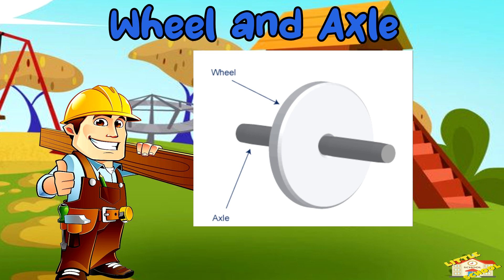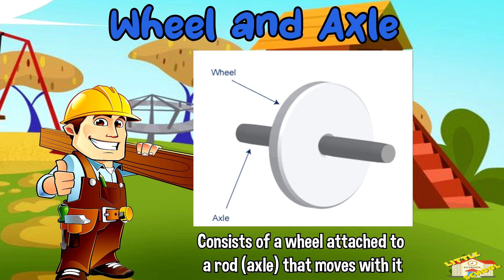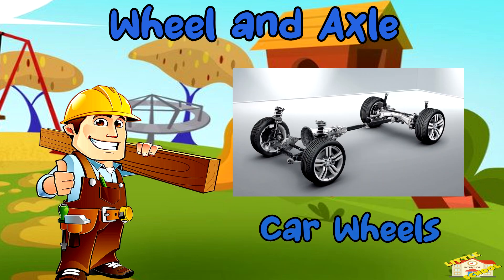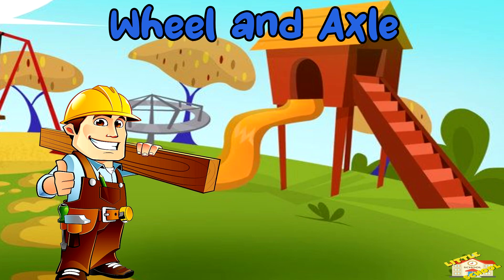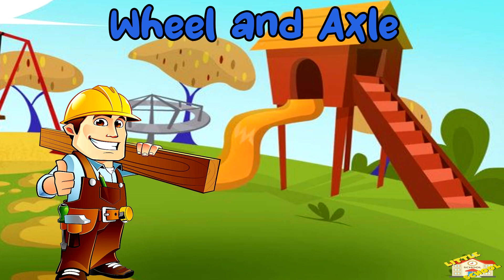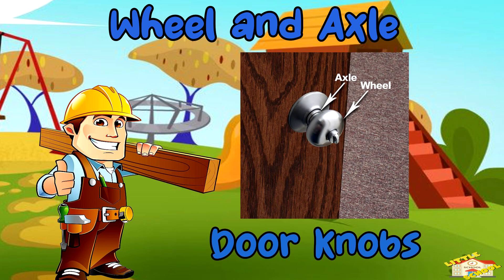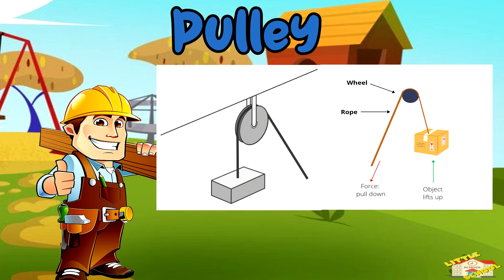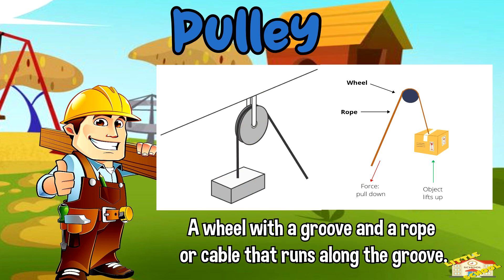Wheel and axle: a wheel and axle consist of a wheel attached to a rod or an axle that moves with it. Examples are car wheels, bicycle wheels, and doorknobs.